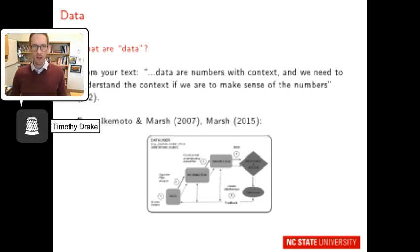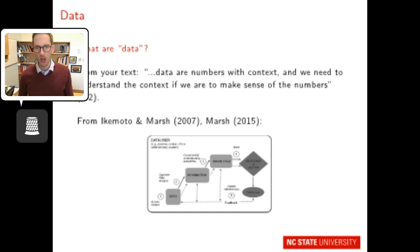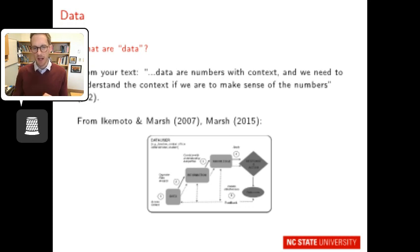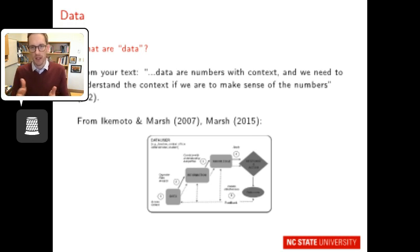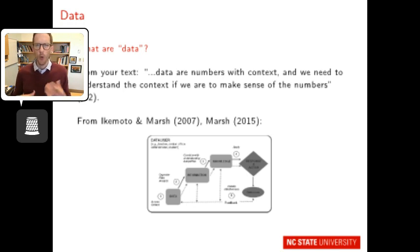It's important to start this lecture by thinking about data and what data are. From your text, data are numbers with context, and we need to understand the context if we are to make sense of the numbers. Ikamoto and Marsh, and later Marsh alone, posited a framework of a data user: data that has been accessed and collected can be translated to information once it's organized, filtered, and analyzed. Combine that with your own prior knowledge and expertise, and that's when it becomes knowledge, which can lead to action and outcomes — a cyclical response that feeds back to data.